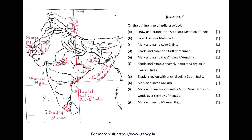Year 2016. On the outline map of India provided: A. Draw and number the Standard Meridian of India. B. Label the River Mahanadi. C. Mark and name Lake Chilka. D. Shade and name the Gulf of Mannar. E. Mark and name the Vindhya Mountains. F. Shade and name a sparsely populated region in western India. G. Shade a region with alluvial soil in south India. H. Mark and name Kolkata. I. Mark with arrows and name the Southwest Monsoon winds over the Bay of Bengal. J. Mark and name Mumbai High.